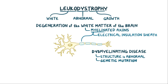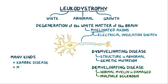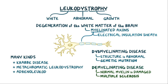In contrast, in a demyelinating disease, previously normal myelin is damaged, like in multiple sclerosis where the immune cells attack the myelin. There are many different kinds of leukodystrophy, but the most common ones are Krabbe disease, metachromatic leukodystrophy, and adrenoleukodystrophy.